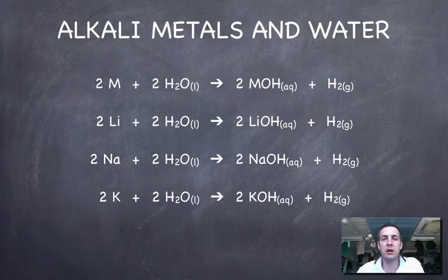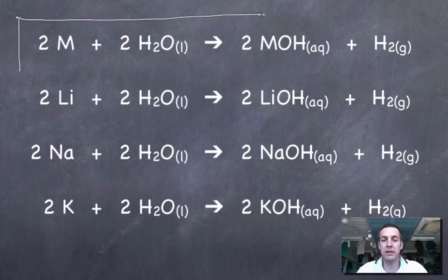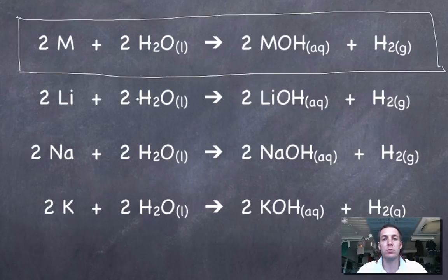Let's start by looking at alkali metals reacting with water. I've written a general equation here. You could memorize the equation for every alkali metal with water, but you might be better off just learning this general equation. All you have to do is substitute the symbol for the alkali metal that you're interested in for the symbol M. M is for a general metal, in particular an alkali metal that forms a 1+ ion when it reacts with water.